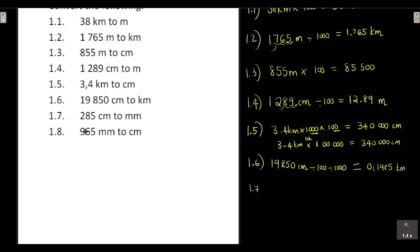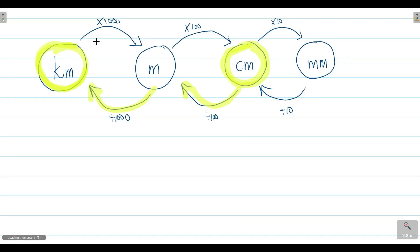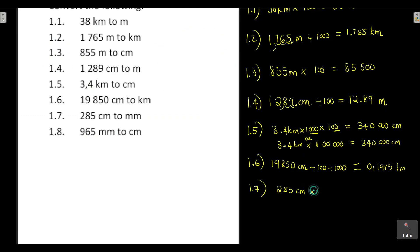Question 1.7: convert centimeters to millimeters. We are at centimeters and want to go to millimeters — bigger to smaller — so we multiply by 10. The answer is 2,850 millimeters.